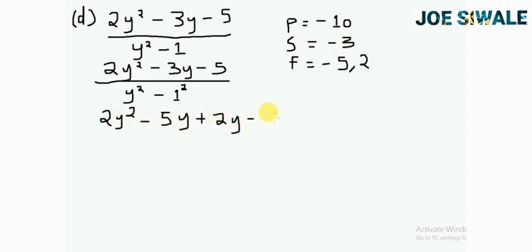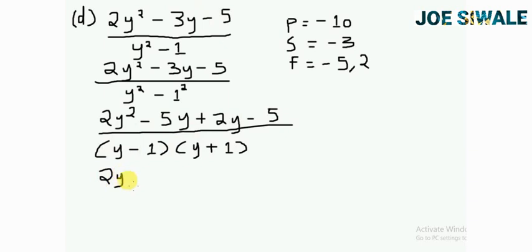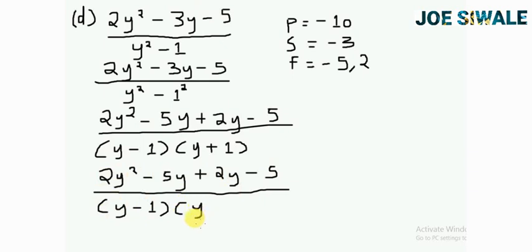I'm going to say 2y squared minus negative 5y plus 2y minus 5 divided by, since I know that y squared minus 1 is the difference of two squares, that is going to be y minus 1 and y plus 1. So I can say 2y squared minus 5y plus 2y minus 5 divided by y minus 1 and y plus 1.